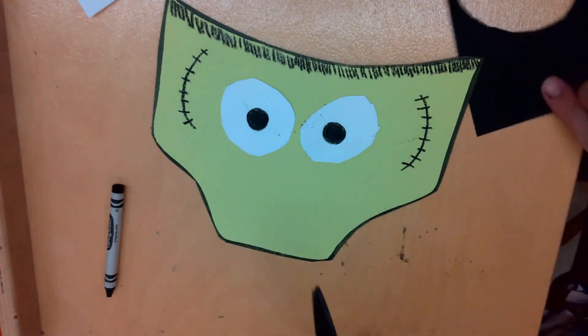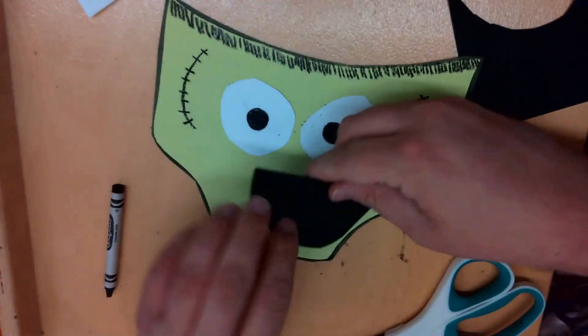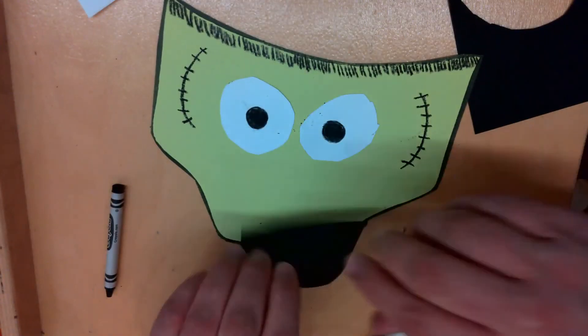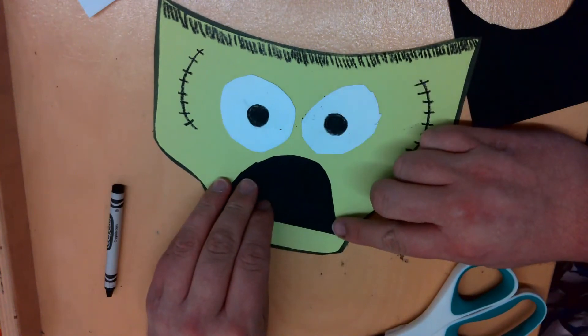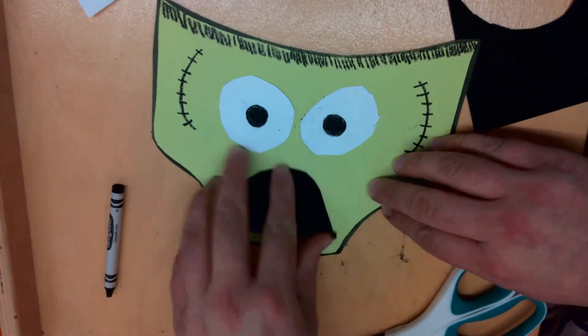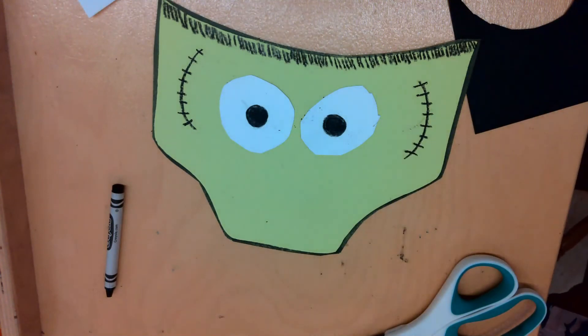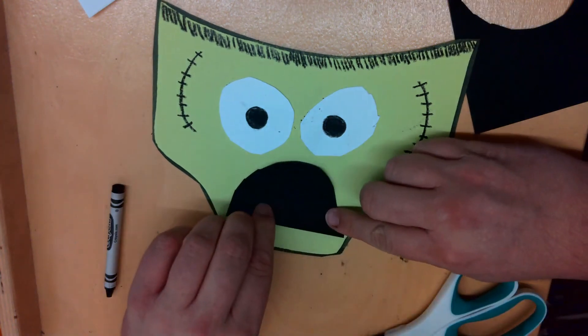We can either make it a happy mouth or we can make it an angry mouth. I'm going to make it an angry mouth. So I'm going to put glue on the back. And now I'm going to stick that onto the underwear.